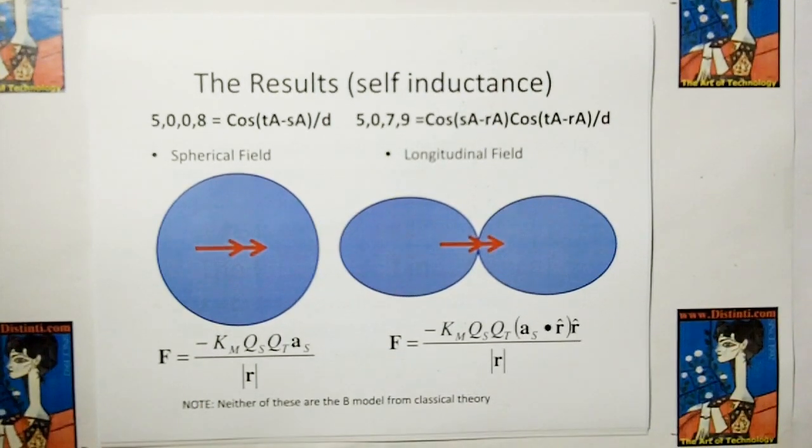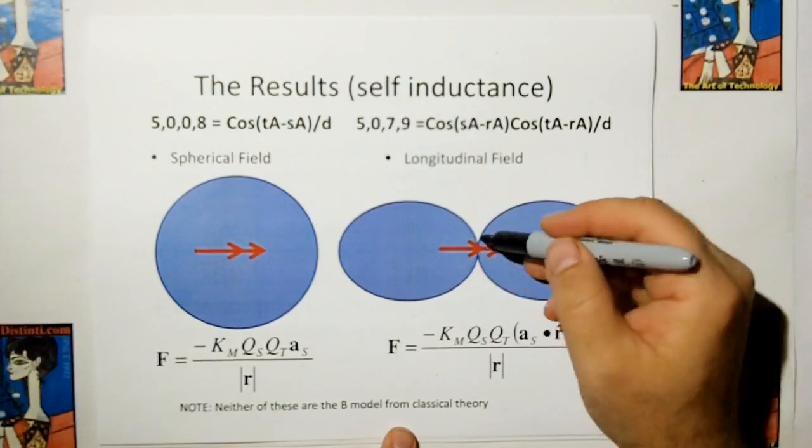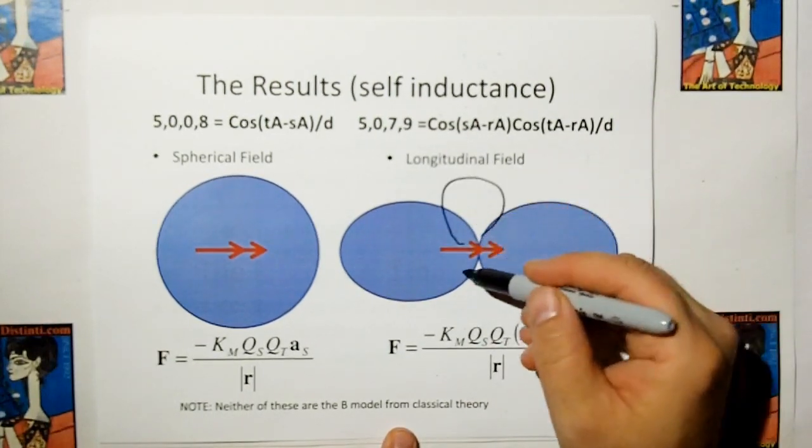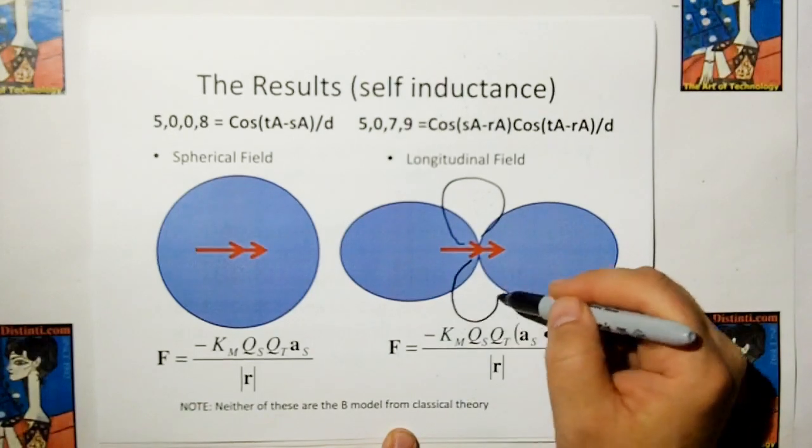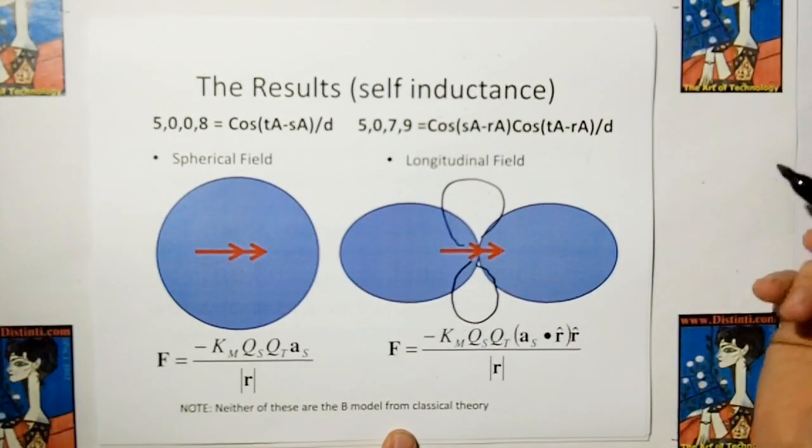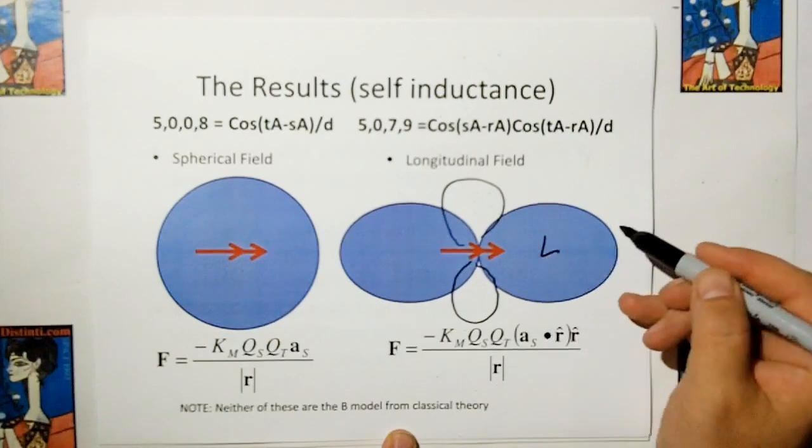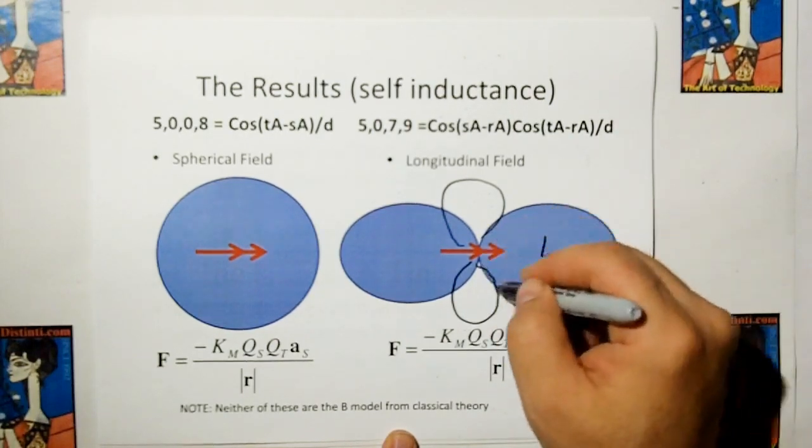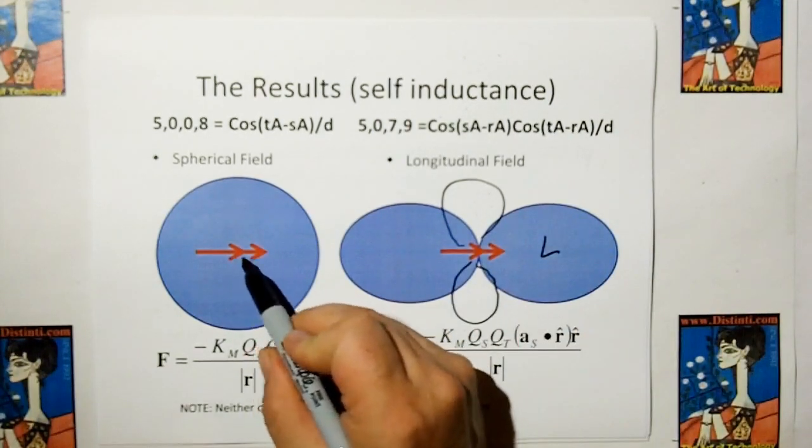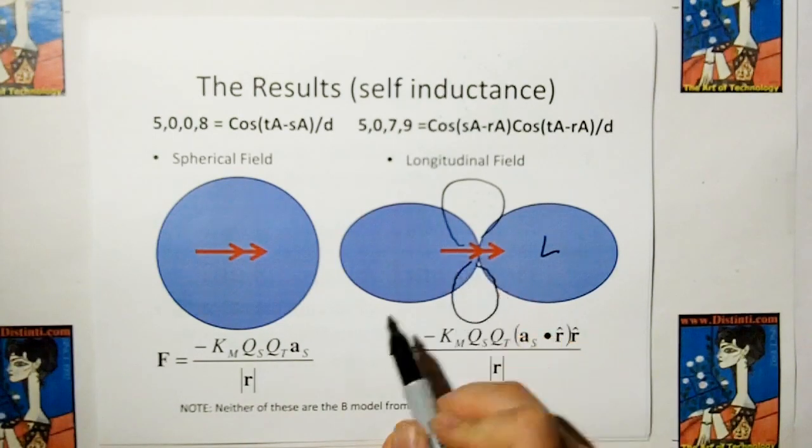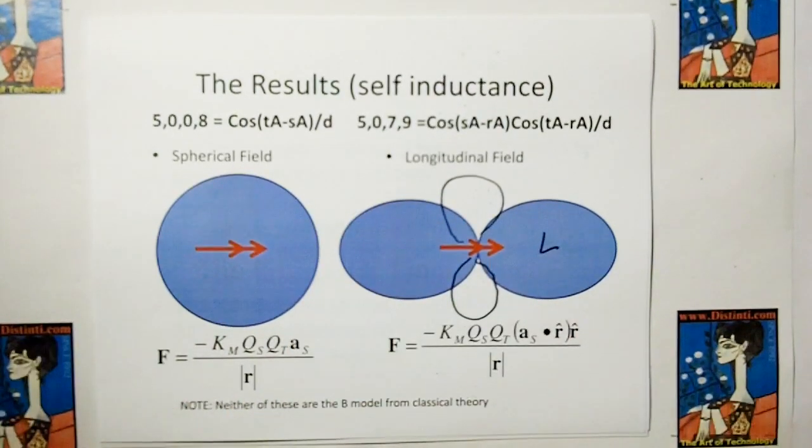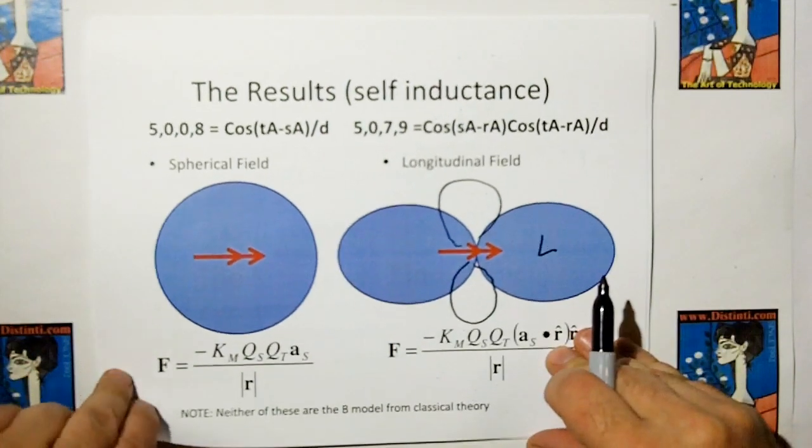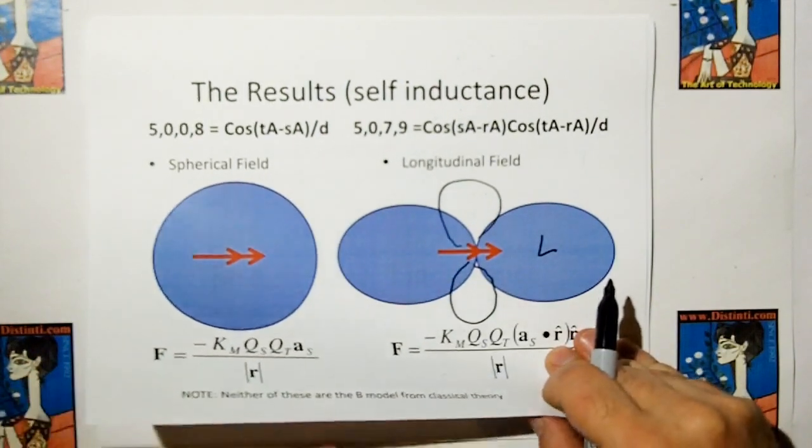But the problem we're running into here is, if you notice, if you're familiar with the Biot-Savart law, Biot-Savart law is a tangent function, not a longitudinal, I'm sorry, a transverse function, not a longitudinal function. This shows that self-inductance is either longitudinal from the accelerating charge, or it's spherical. And I like the spherical. Spherical is simple. But you know, we being scientists, we can't pick and choose what's beautiful or what's not beautiful.